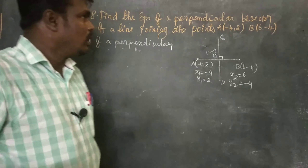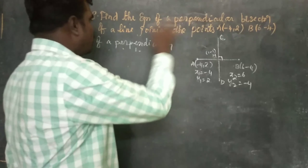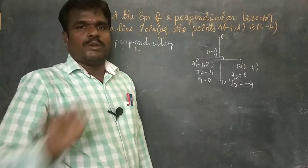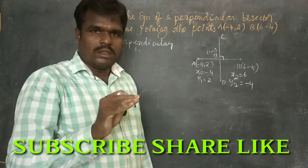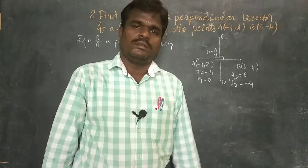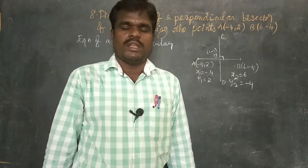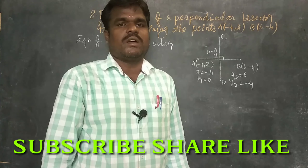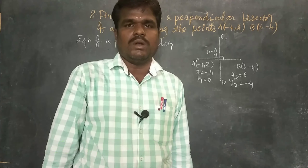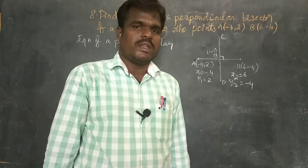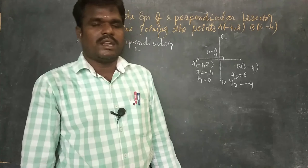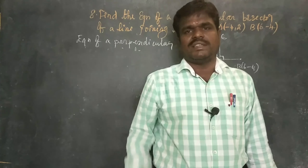To summarize the procedure for finding the equation of a perpendicular bisector: first, find the midpoint; second, find the slope of AB; third, find the slope of CD; fourth, use the equation of a straight line formula to find the required equation.